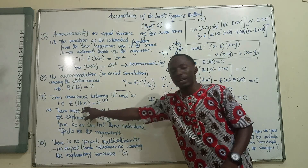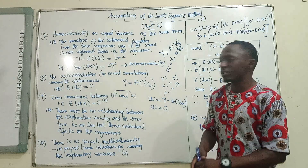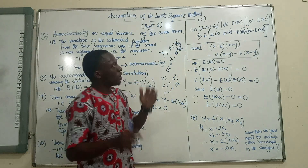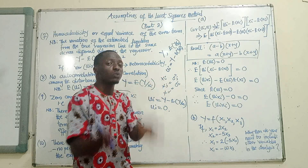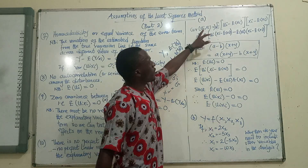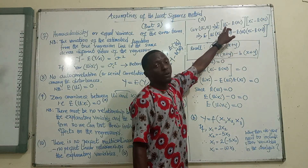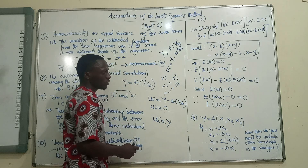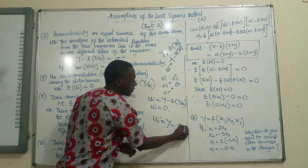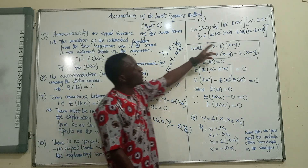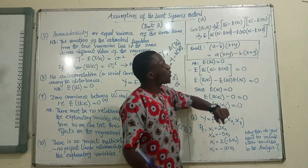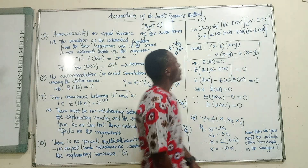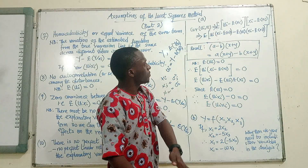The expected value of Ui and Xi has to be equal to zero — the covariance must be zero. To prove this mathematically: the variance of Ui is Ui minus the expected value of Ui, and the variance of Xi is Xi minus the mean value of Xi. When we take the expectation of everything, it has to equal zero. The covariance combines these two variances.